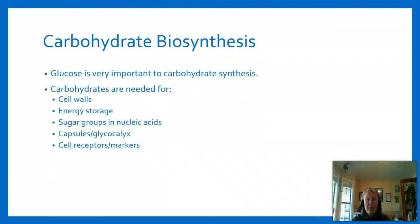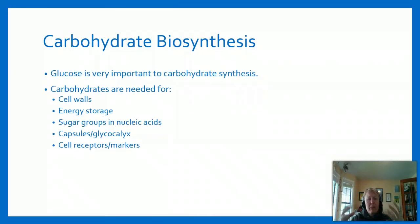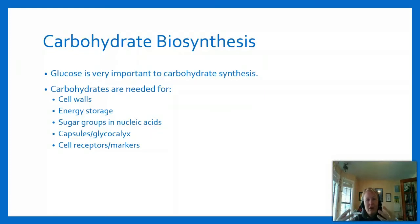For carbohydrate biosynthesis, glucose is a major and important molecule - it's the building block for all carbohydrates. Carbohydrates are needed in the cell for cell walls through glycoproteins and glycolipids, energy storage, and sugar groups on nucleic acids. Remember, nucleic acids have three parts: the sugar, the phosphate, and the nitrogenous base. In microbes, carbohydrates are important for capsules and the glycocalyx, as well as cell receptors and markers.